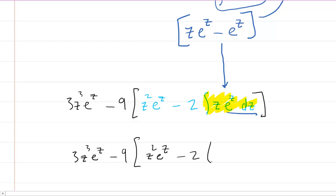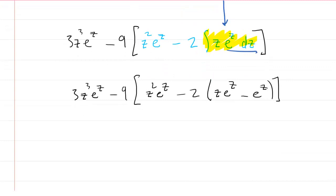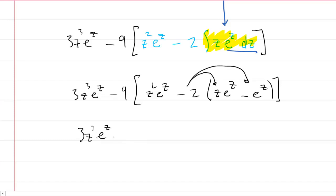Minus 2, and then we're going to sub in this z e to the z minus e to the z. And I suppose for attractiveness, for clarity, we can do some distributing here. Why don't we distribute this minus 2? So we'll have 3z cubed e to the z minus 9 bracket, z squared e to the z minus 2z e to the z.